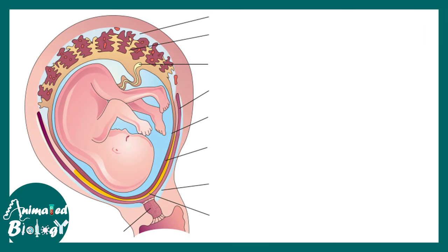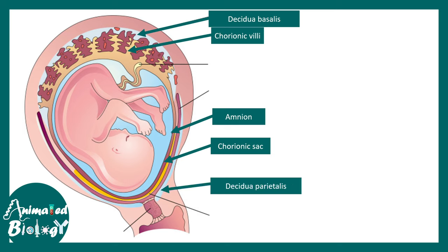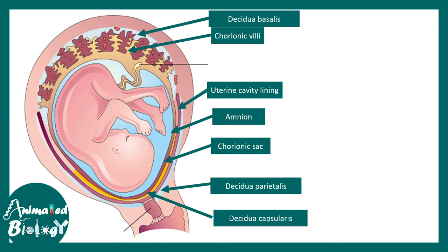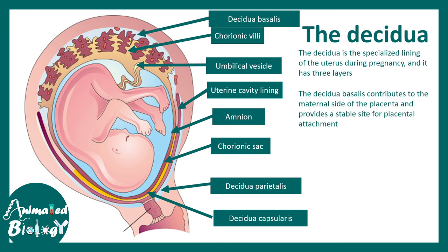Now let us understand the different components of the placenta one by one. Here is the amnion, here is the chorionic sac, and here are the finger-like projections — the chorionic villi. There are important parts which are part of the mother: decidua basalis, decidua parietalis, and decidua capsularis — these are the three layers of decidua. You can also see the uterine cavity lining and umbilical vesicle, which is the future umbilical cord. The decidua is a specialized lining of the uterus during pregnancy. Among the three layers, decidua basalis contributes to the maternal side of the placenta and provides a stable site for placental attachment.